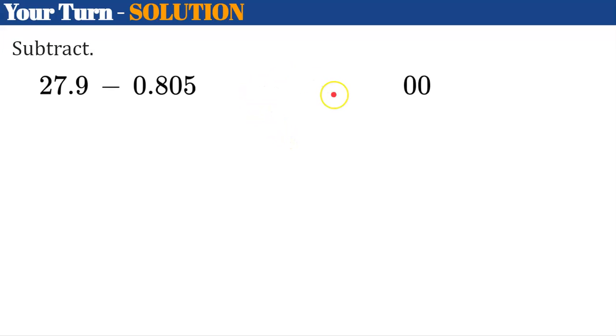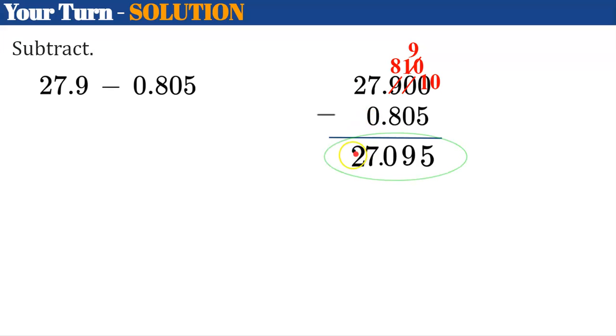Welcome back. I hope you started with 27.9. We're going to subtract, lining up our decimal point, and then I have my 0s to fill in. And I'm ready to go. Well, I cannot take 5 away from 0. I can't borrow from 0. So I'm going to go to my 9, cross it out, make it 8. And then I've got to change this 0 to a 10. And then I'm going to borrow from my 10, and I'm going to add my 1 here so that I have 10. So 10 subtract 5 is 5, 9 subtract 0 is 9, 8 subtract 8 is 0, bring down the decimal point, 7 subtract 0 is 7, 2 subtract 0 is 2.